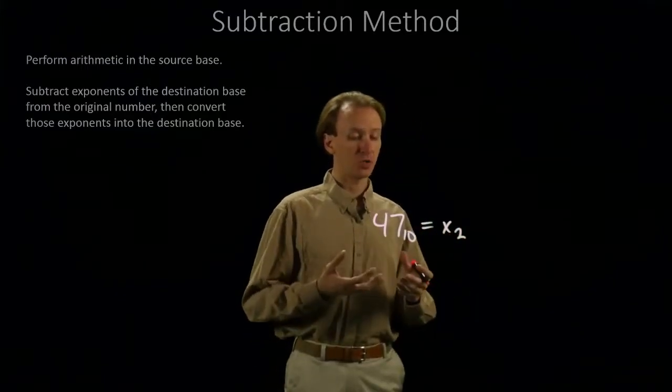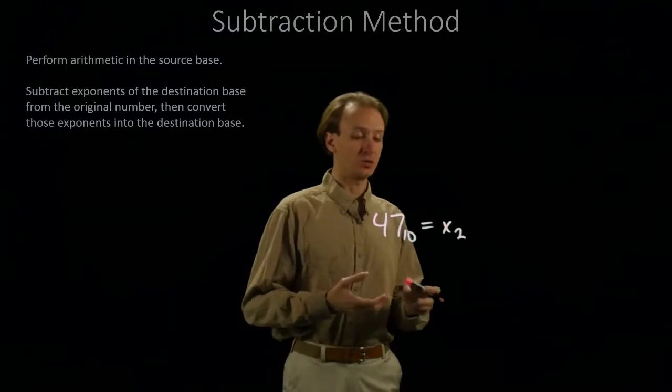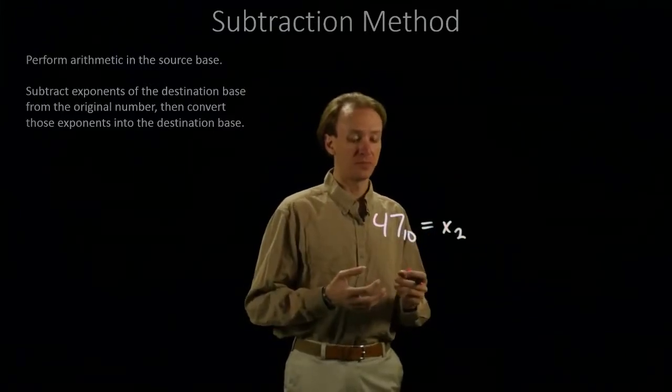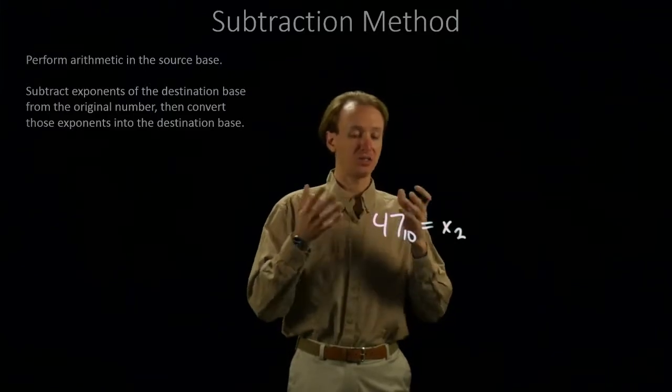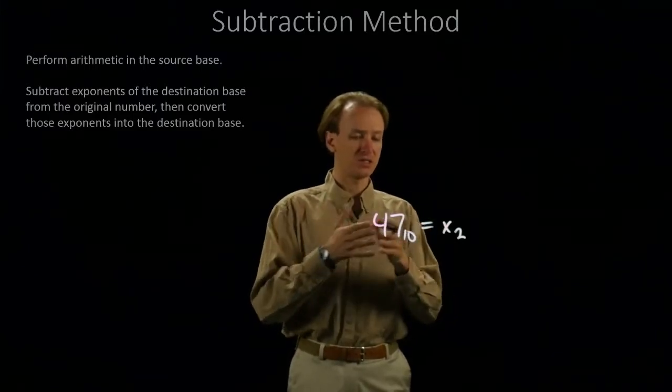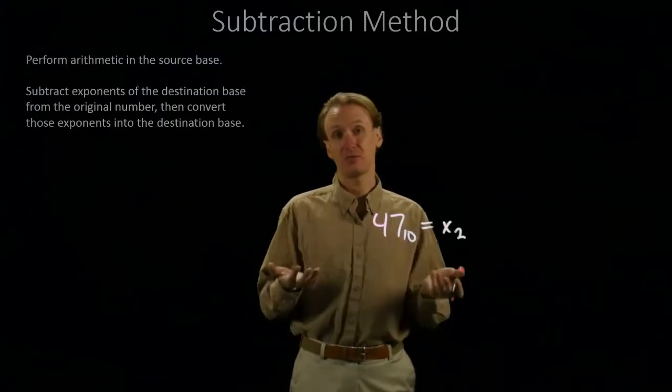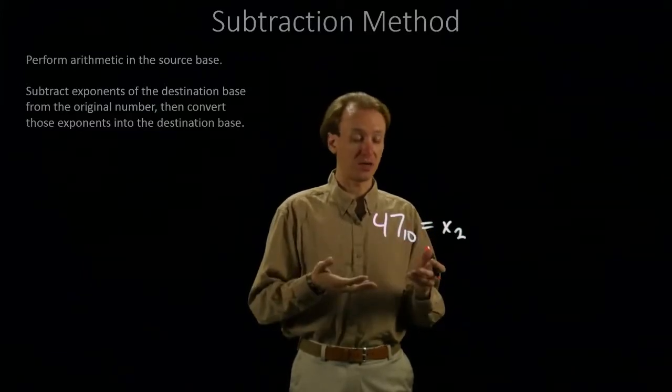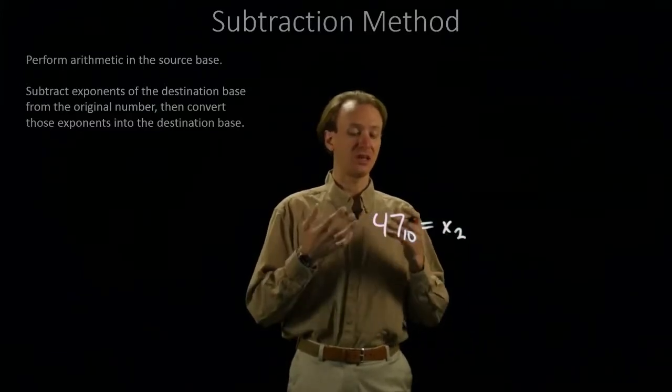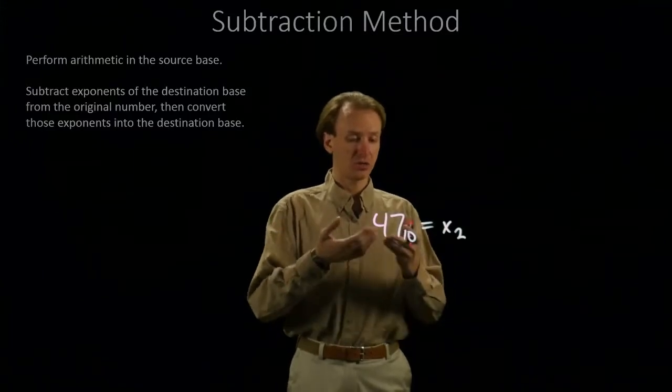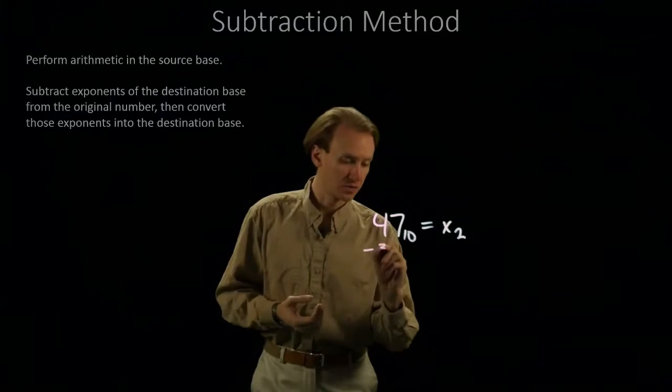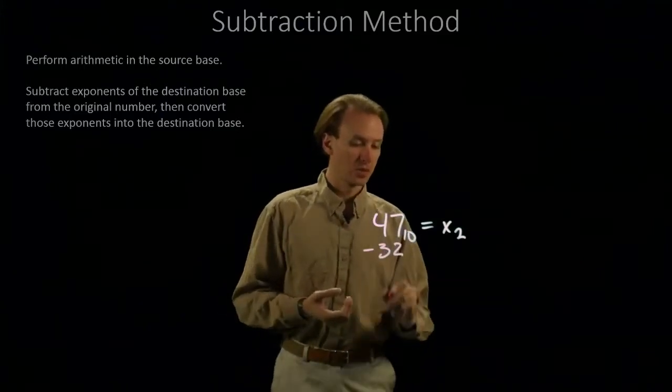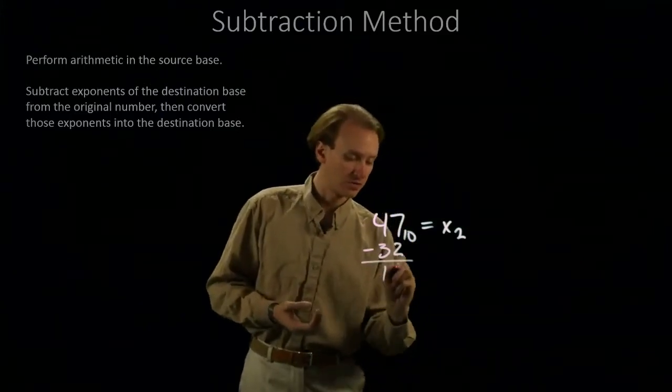The first thing I'm going to do is try to look for exponents of base 2 in my decimal number. I know a bunch of exponents in base 2. I know that 64 is one of them, but 64 is bigger than 47, so I'm not going to be able to subtract 64 from 47. I'll go to the next lowest exponent, which is 32. 32 is smaller than 47, so I'll subtract off 32. This would leave me with 15.